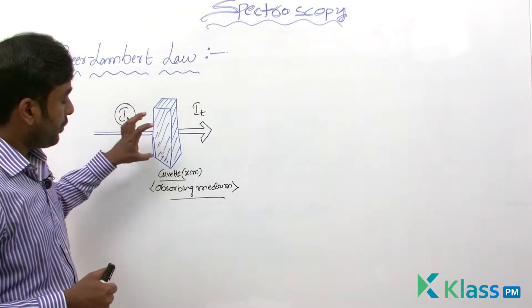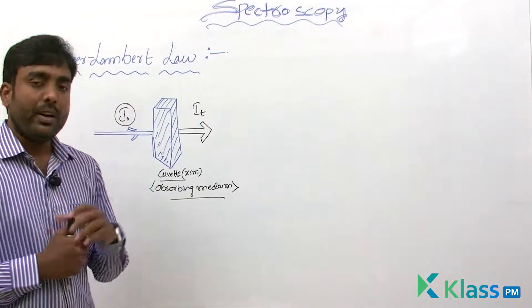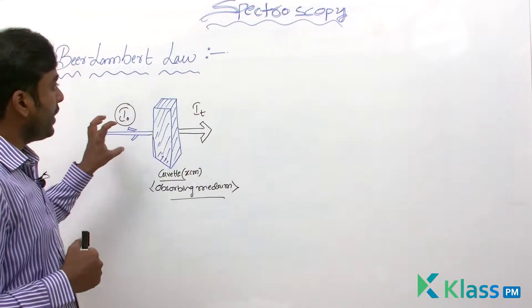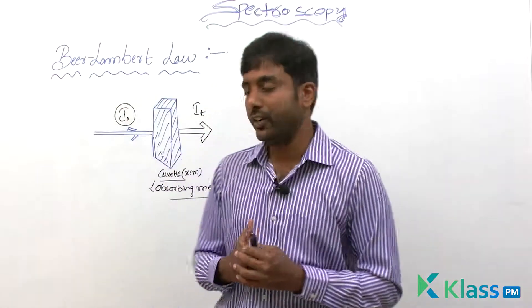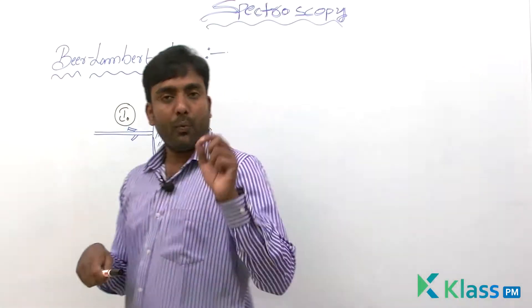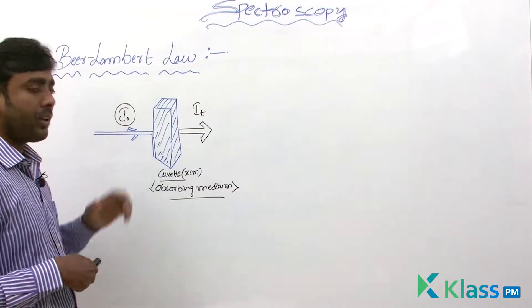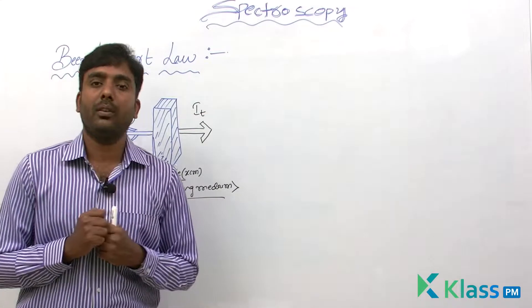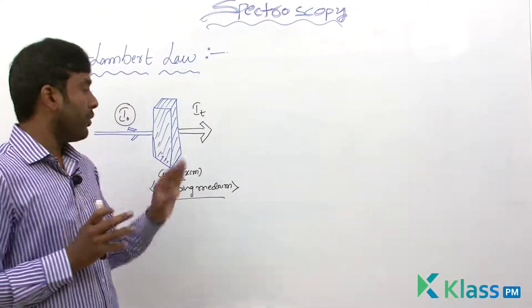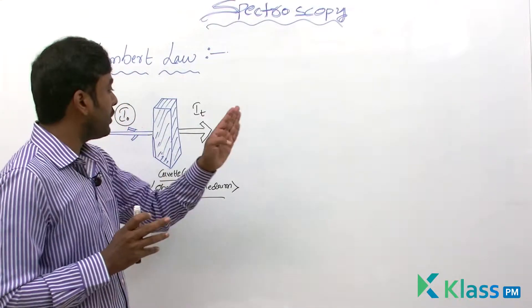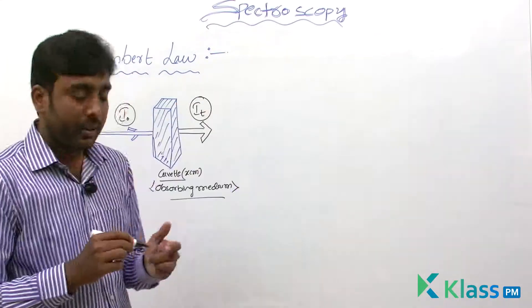A cuvette whose width is x centimeters is holding some sample. We are sending UV, visible, or both UV-visible range of radiation through this sample. When we send the incident light, the radiation intensity is I0, and some of the radiation is absorbed by the sample while the remaining radiation is transmitted through the sample.